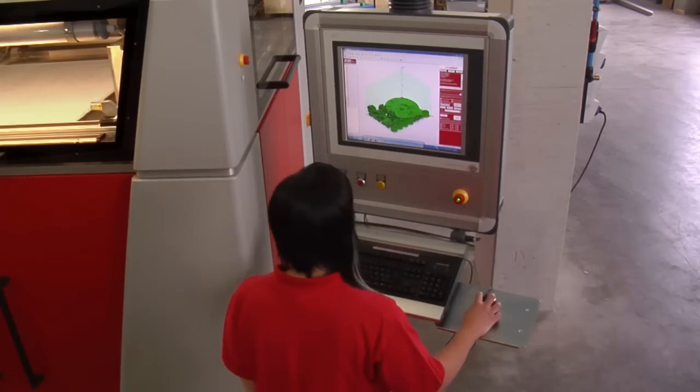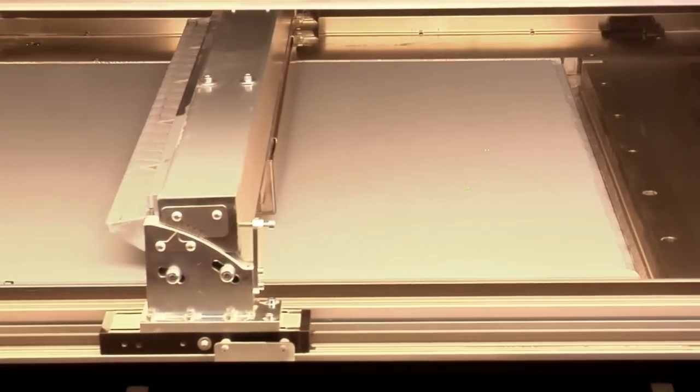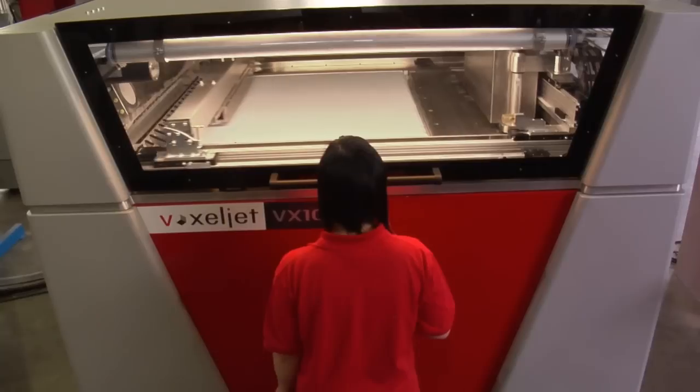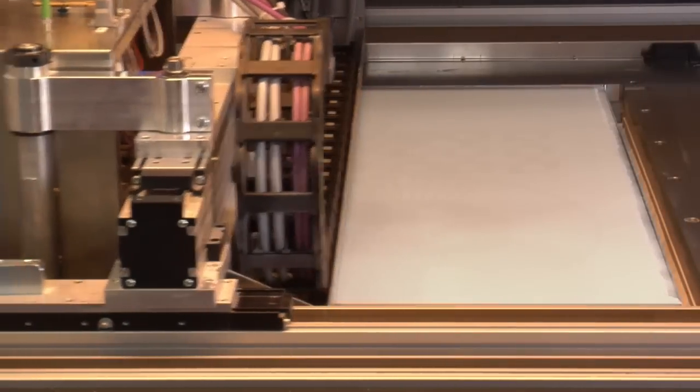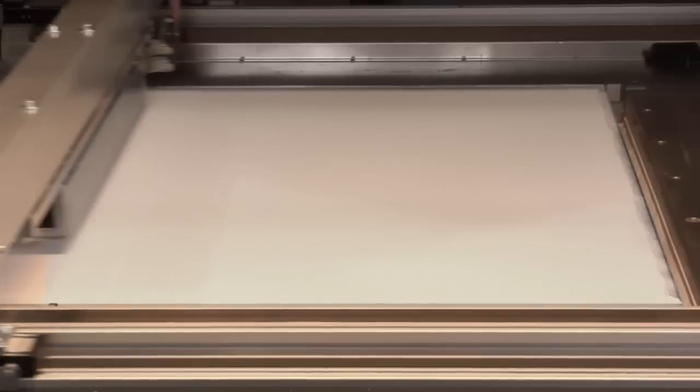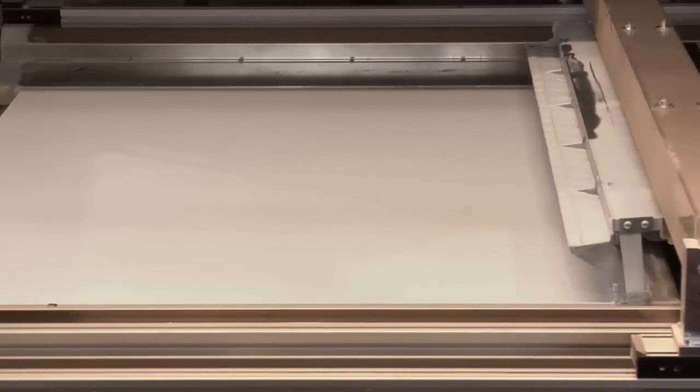The printing process begins when the re-coater applies the PMMA powder to the build space in 100 to 150 µm layers. At the same time, the printer head selectively doses the binder at the points at which the model is created. The 3D printer's vertical build speed can reach up to 18 mm per hour. This layer-building method makes it easy to manufacture complex geometries with undercuts in one piece.